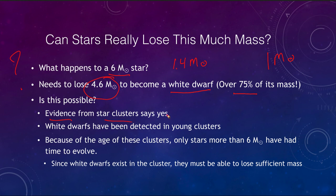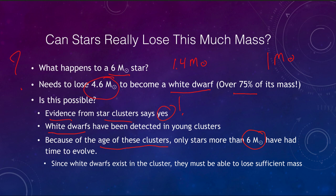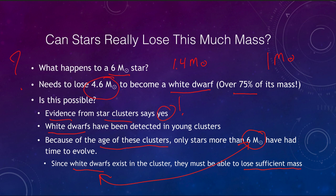We have evidence from star clusters that yes, this can occur. We have detected white dwarf stars in young clusters, and we can use the cluster age determination method — looking at the turnoff point of those clusters — to find that the only stars that would have had time to evolve were those of six solar masses or more. While we have not directly seen six solar mass stars become white dwarfs, we can infer it because white dwarfs are present in these clusters, and the only stars that have evolved must have been able to lose sufficient mass to become a white dwarf.